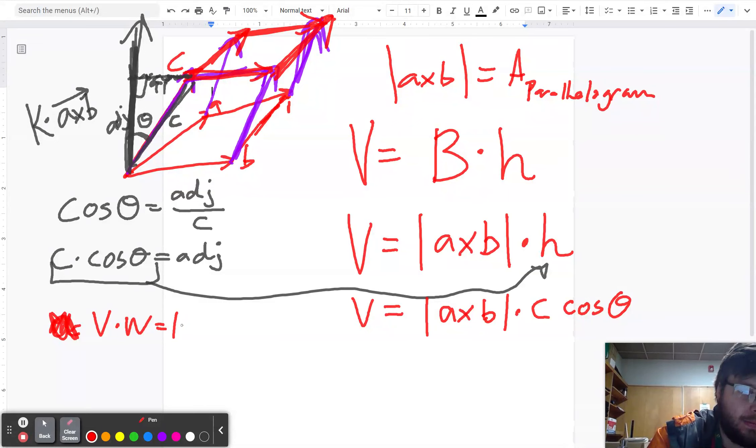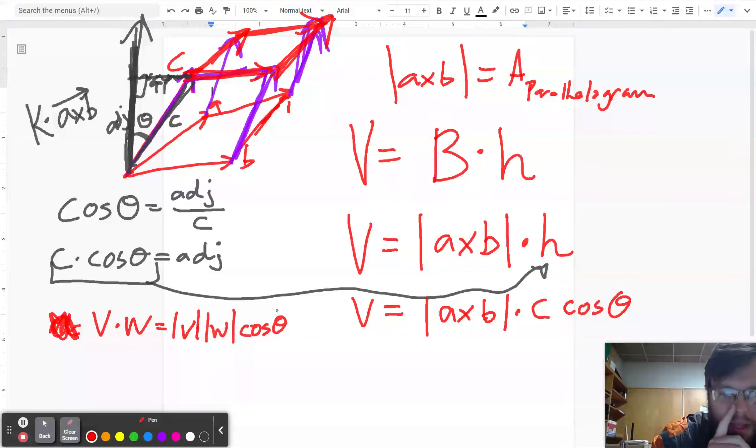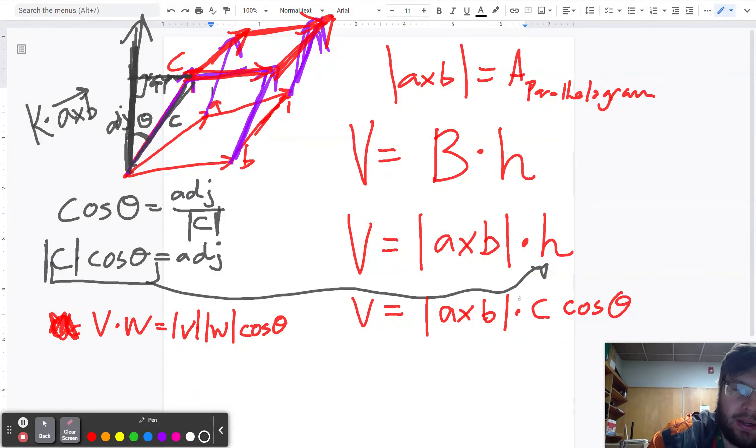we would get magnitude V magnitude W times cosine theta. And so I'm seeing something that looks really similar to that. And I actually should mention over here on my drawing, this should say the magnitude of C. Because I'm talking about the length of that vector. So I'm going to stick a little magnitude on there. So I've got magnitude right there.